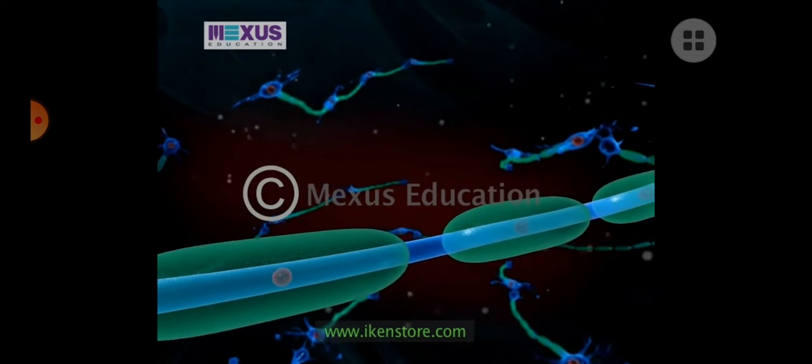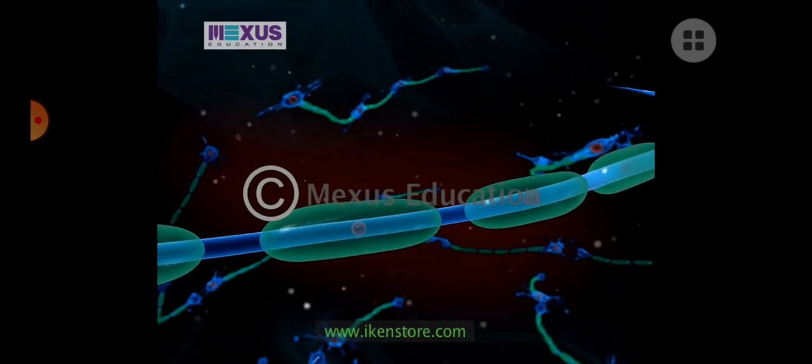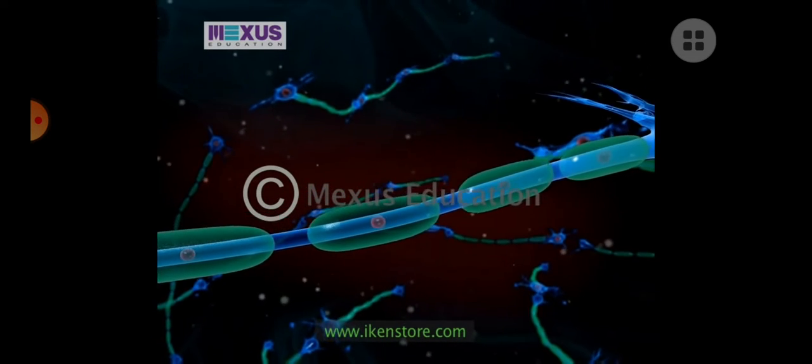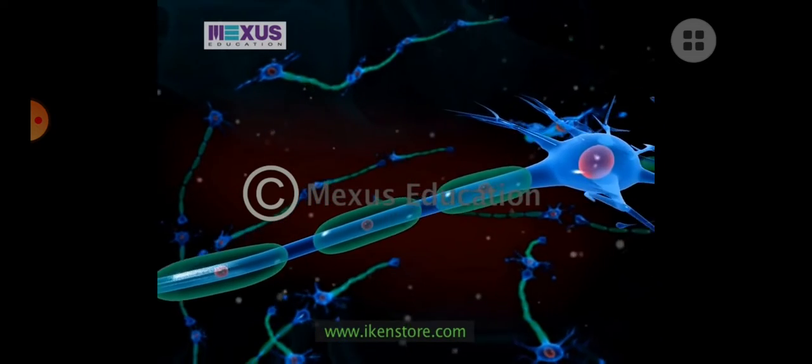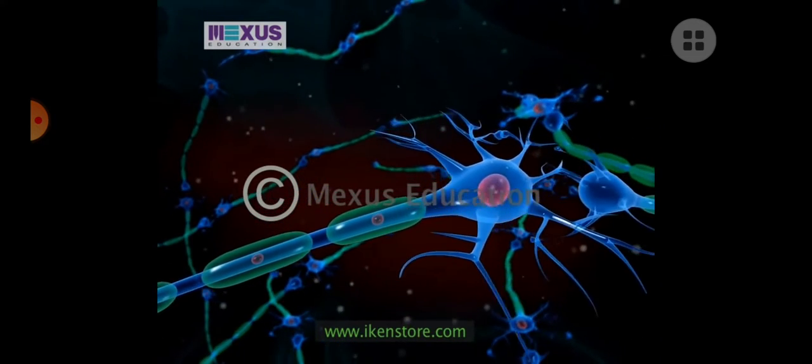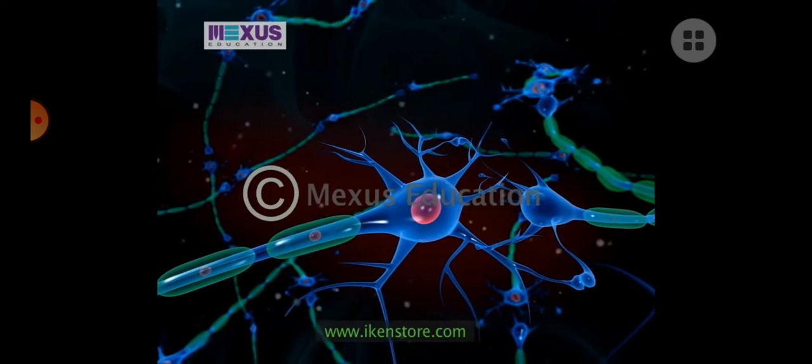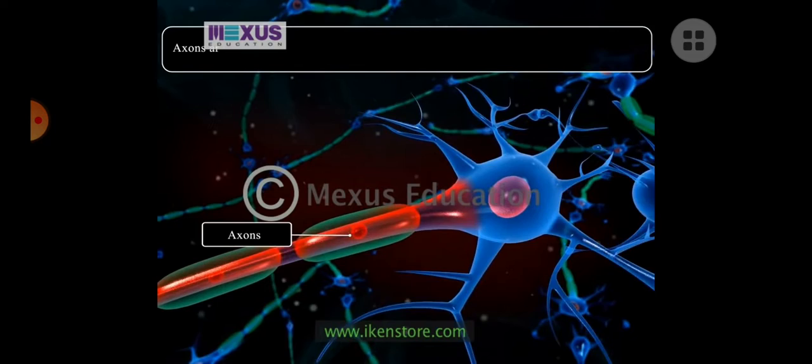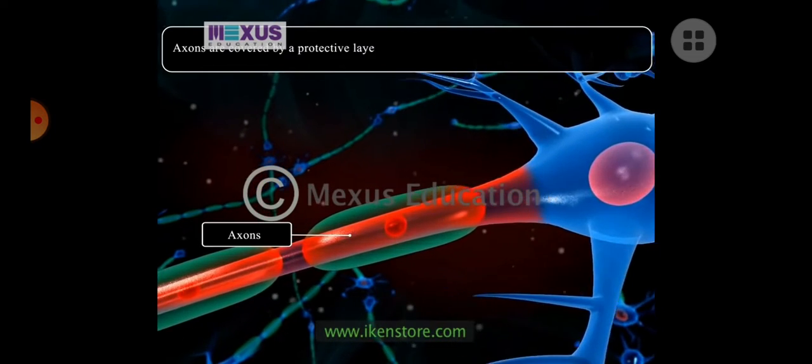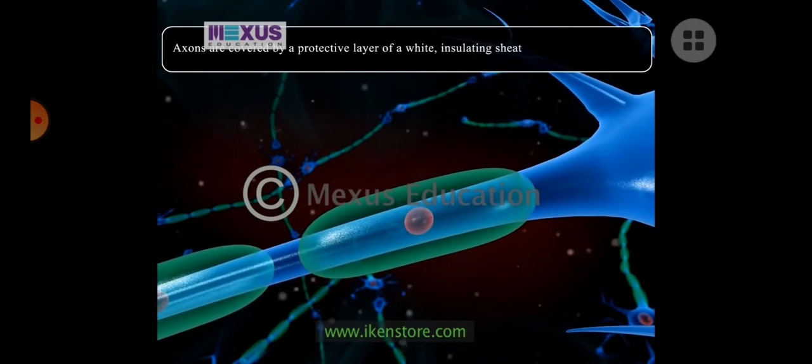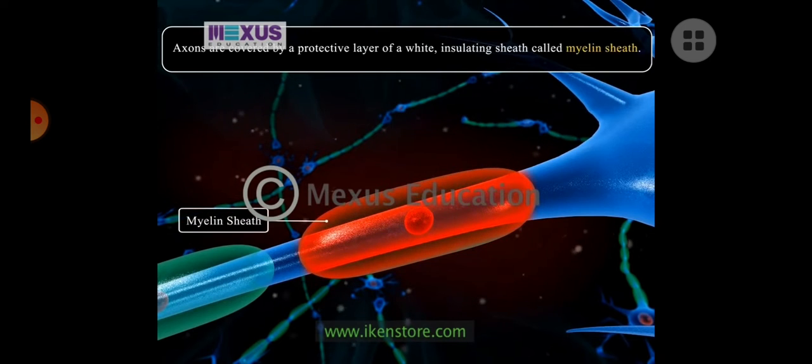This is axon. In axon, there is a covering which is very important for message transfer. This covering is called myelin sheath. If you remember, glial cells. We have read that oligodendrocytes used to cover it. Right? And schwann cells. So the axon covering is called as myelin sheath covering.